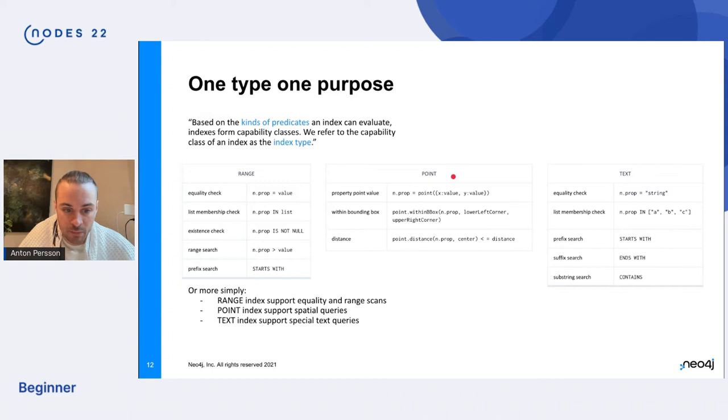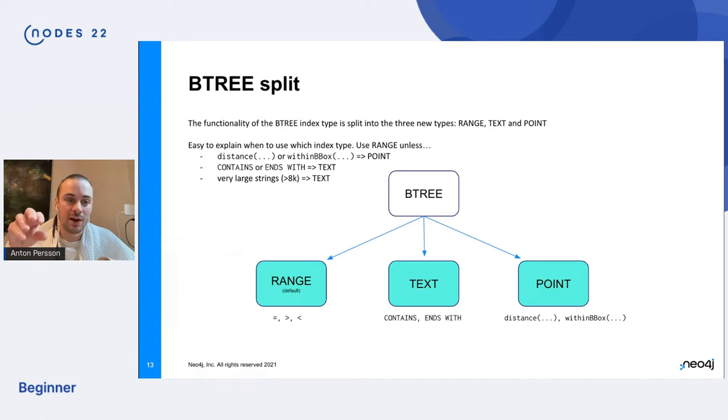So for example, we have range, point and the text type here, and the point type has support for equality on point values, bounding box queries, and distance. The text index has a bunch of other predicates, or like you can think of it more simply as range does equality and range scans point do spatial queries. The text does specially advanced text type of queries. And we'll dig into this a little bit more.